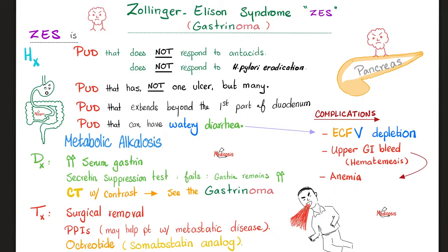Management: it's a tumor, so remove it surgically. Before removal or if it metastasizes, you can treat with proton pump inhibitors and octreotide, which is a somatostatin analog. Recall that somatostatin inhibits everything — it even inhibits its own secretion. So octreotide will try to suppress gastrin secretion.